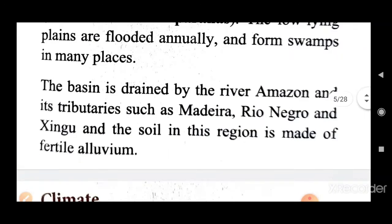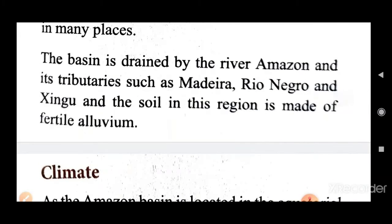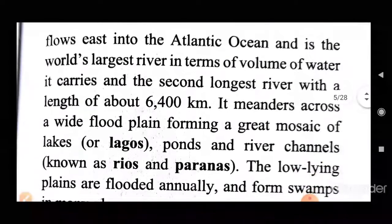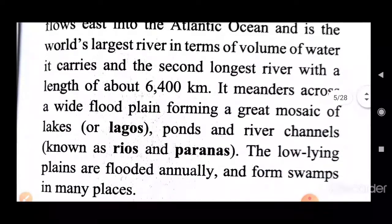The low-lying plains are flooded annually and form swamps in many places. The basin is drained by the river Amazon and its tributaries such as Madeira, Rio Negro, and Xingu, and the soil of this region is made of fertile alluvium. This basin is the most moist and swampy due to the flooding.